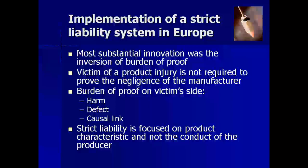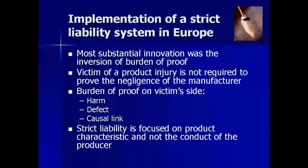Beside introducing a strict liability regime of product liability in Europe, the most substantial innovation was the inversion of the burden of proof. In a fault-based system, the injured person had to prove not only the general circumstances of damages but also the manufacturer's negligence. The EU directive gave a consumer protection perspective to lawsuits and stated that the injured person has to prove only the harm, the defect of the product, and the causal link between the injury and the defect. While fault-based liability focused on the conduct of the producer, the new strict liability model focuses on product characteristics.